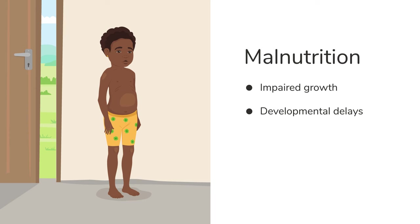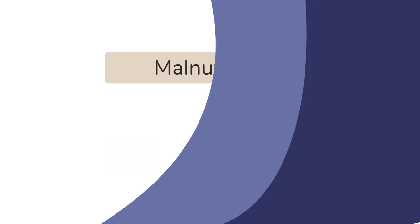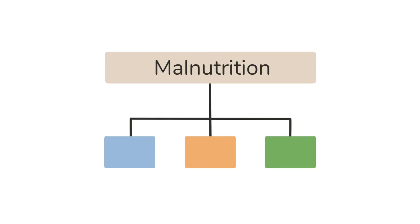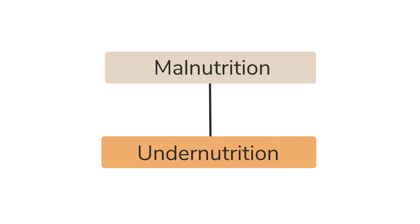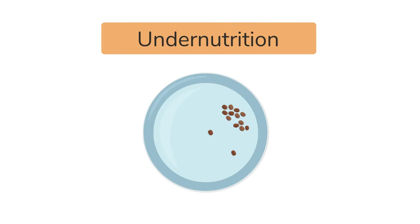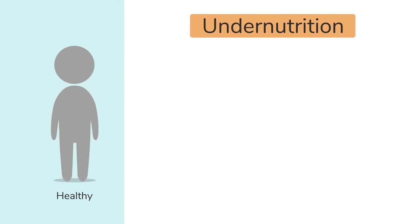Malnourished children are more likely to die than well-nourished children. There are different types of malnutrition, but this module will focus on undernutrition — this is when a child does not get enough nutrients to grow and develop properly. The child can be affected in several ways.